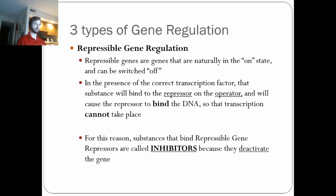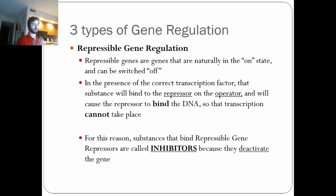Another common example is tryptophan — the stuff in turkey that you eat during Thanksgiving. Your body naturally produces tryptophan, but needs some level of it. If you're on a diet that doesn't include a lot of tryptophan, your body will produce what you're not eating. However, if you have a really high tryptophan diet — say it's Thanksgiving and you're eating as much as you can — your body will say: we've got a whole lot of tryptophan, we don't need more. It'll turn this gene off for a while, metabolize what it has, then turn it back on once levels run low.